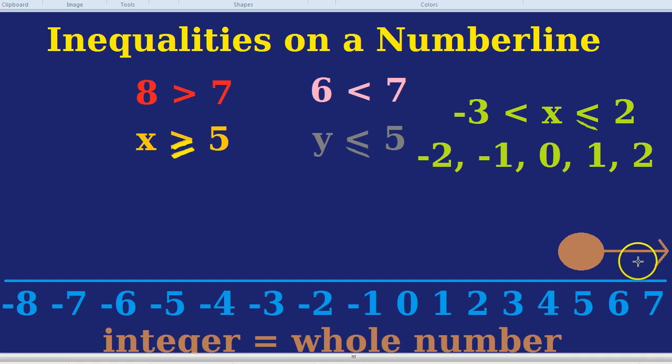It's a good tip to kind of test in your head which numbers are allowed and see if your line allows those numbers. So x is greater than or equal to 5. It's a filled-in circle and it's going this way because 6 is allowed, 7 is allowed, 8 is allowed.